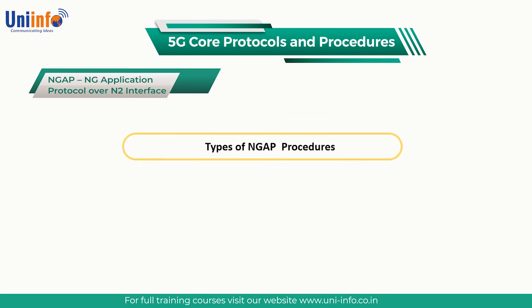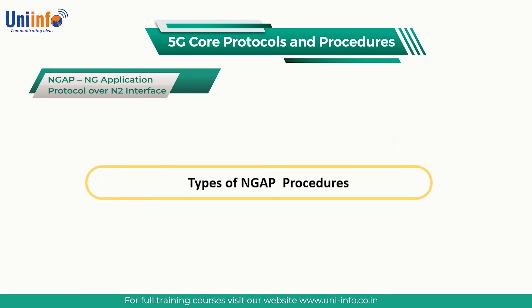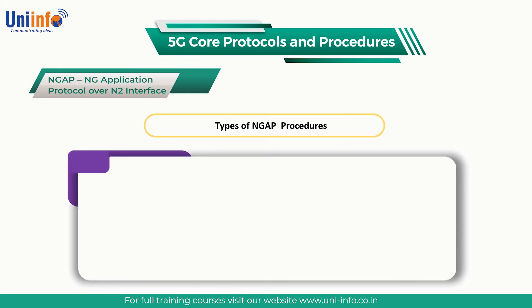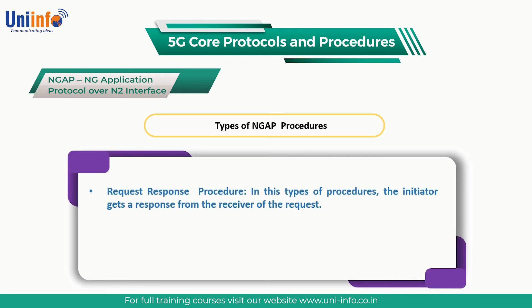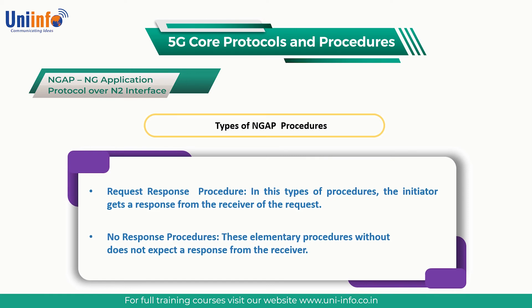Next come the types of NGAP procedures. An elementary procedure is a sequence of interaction between the GnodeB and AMF, and 3GPP specifications have defined two types of elementary procedure. First, request-response procedure — in this type, the initiator gets a response from the receiver indicating whether the request was successfully handled or not, or a failure response. Second, no-response procedures — these elementary procedures do not expect a response from the receiver. These messages are used, for example, when the AMF wants to only deliver a downlink NAS message, and there is no need for GnodeB to provide a response since error handling is handled at the NAS level.